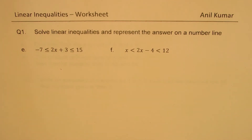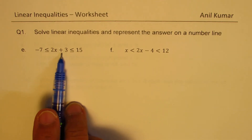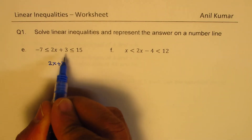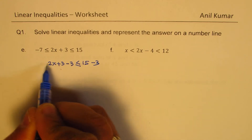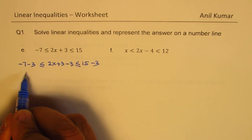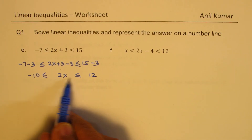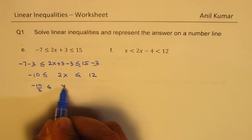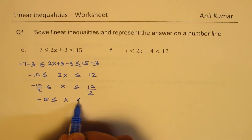Now let's talk about double inequalities. When the variable appears in only one of the terms, we can solve directly. Here we have 2x plus 3. We take away 3 from each and every term: 15 minus 3 and minus 7 minus 3. So we get minus 10 less than or equal to 2x less than or equal to 12. Dividing by 2 gives x greater than or equal to minus 5 and less than or equal to 6.